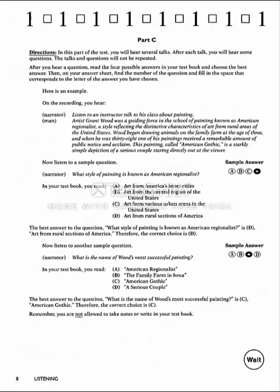Part C, page 519. Directions. In this part of the test, you will hear several talks. After each talk, you will hear some questions. The talks and questions will not be repeated. After you hear a question, read the four possible answers in your test book and choose the best answer. Then on your answer sheet, find the number of the question and fill in the space that corresponds to the letter of the answer you have chosen. Here is an example. On the recording you hear: listen to an instructor talk to his class about painting.